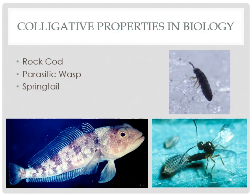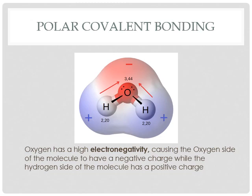Colligative properties are used in biology to prevent organisms from freezing to death. All of this has to do with water having polar covalent bonds — most of the properties we've talked about are because of that. Oxygen has an extremely high electronegativity, meaning it's pulling electrons to itself. One side of the water molecule is going to be negative — that's where the oxygen and electrons hang out — and the other side is positive. Because of that, it has two poles and can attract other water molecules.